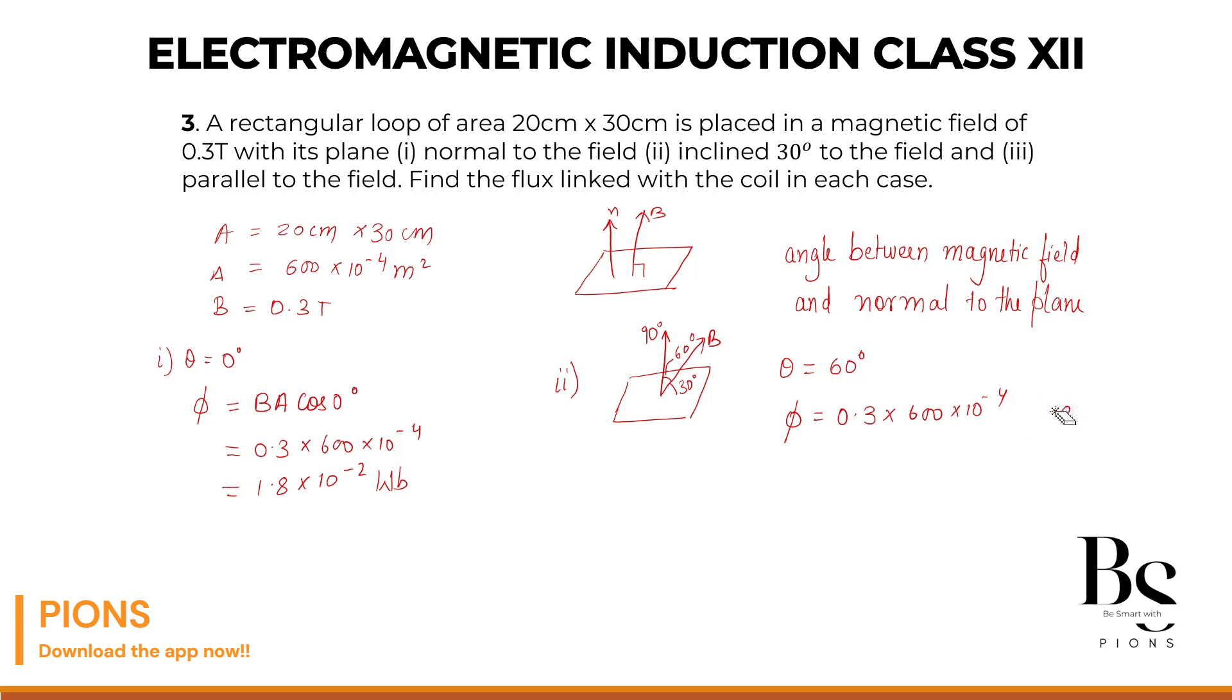Correct. Sir, what is cos 60? Half. So let's put here straight away into half. So this first part, initial part is simply we have solved in the first part. 1.8 into 10 raised to minus 2. Whole divided by 2. So that will be 0.9 into 10 to the power minus 2.